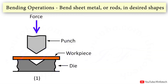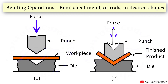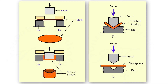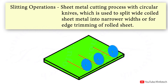Bending operation is used to bend sheet metal, rod, or pipes into desired shapes. In drawing operation, a sheet metal blank is positioned over a die cavity and then a punch pushes the metal into the opening, forming convex or concave shapes. Bending and drawing are methods of shaping component parts mainly through plastic deformation of material.